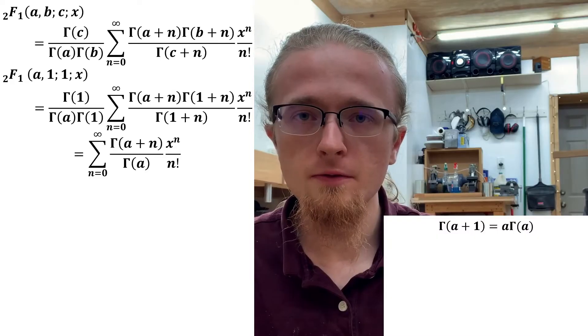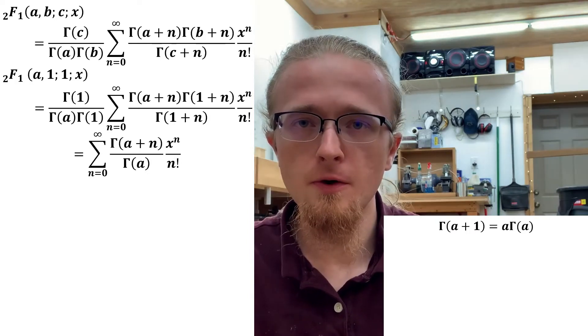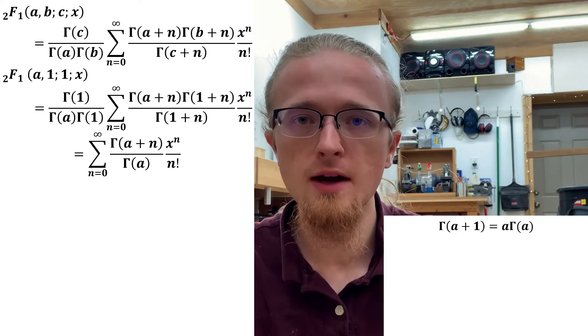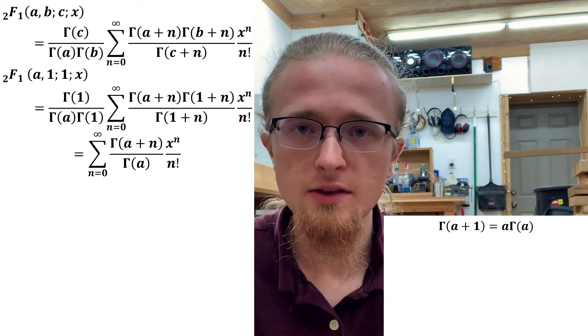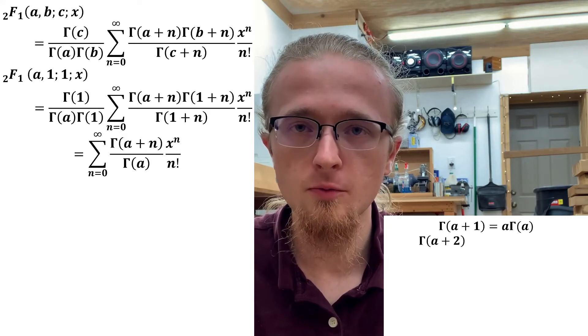Specifically, recall the famous identity Γ(a + 1) = aΓ(a), because from this simple identity, we can extract a more general identity that's directly useful in our mission. To see this, consider the case of Γ(a + 2) instead of Γ(a + 1).